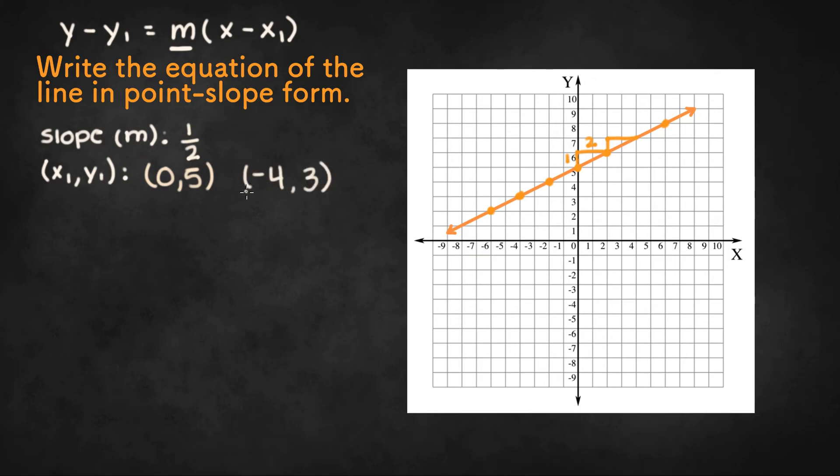So now we can show two different equations of this line in point-slope form. So using this first point over here we get y minus 5 equals 1 half times x minus 0.